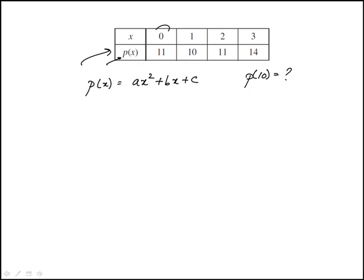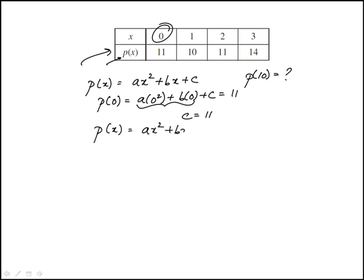If we start with x being 0, we know p of 0 is 11. That means these are 0, so c is 11. So far we know p of x is ax squared plus bx plus 11.